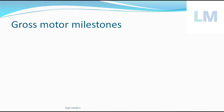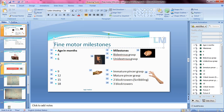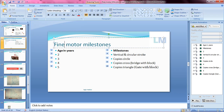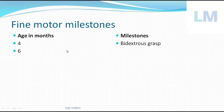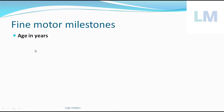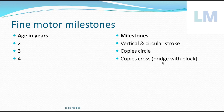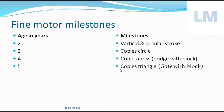Now moving to fine motor milestones by age in years. At 2 years, the child can do vertical and circular strokes. At 3 years, it can copy a circle. At 4 years, it can copy a cross and build a bridge with blocks. At 5 years, it can copy a triangle and build a gate with blocks.